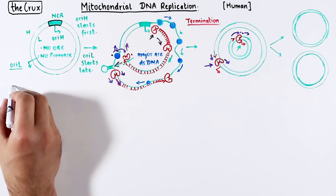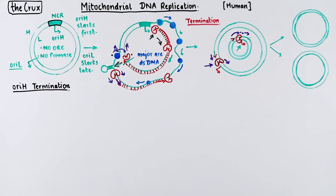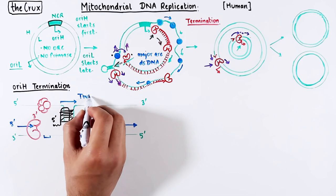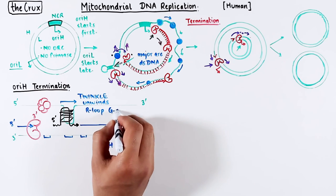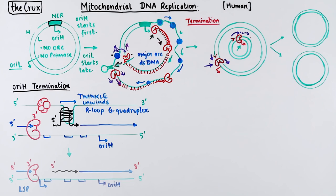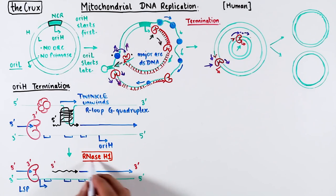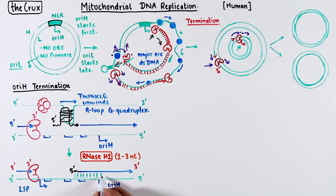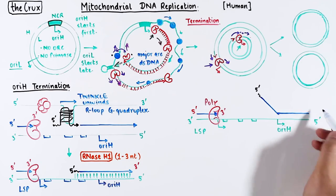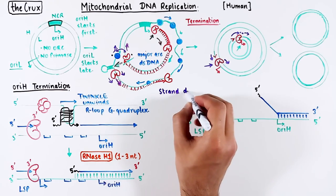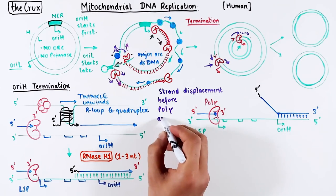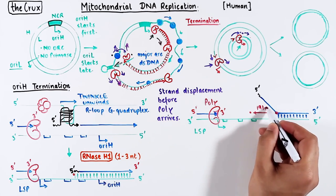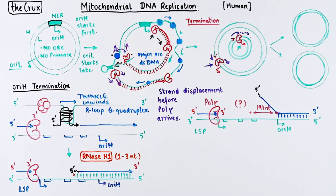OriH termination is slightly different and a little weird. When Twinkle eventually circles back to the starting point, it unwinds the G-quadruplex, exposing the RNA and making it a target for RNase H1 degradation. RNase H1 leaves behind some bits of RNA. The weird part is that even before the DNA polymerase has reached the 5' end of the RNA primer in front, a flap is pre-generated — strand displacement happens before polymerase gamma gets a chance. This flap is so precise that the length of DNA flapped out is about 191 bases from the edge of the 5' end, matching the exact position of the proposed OriH location.